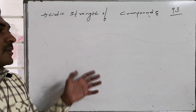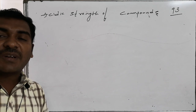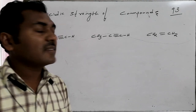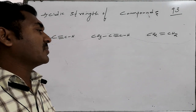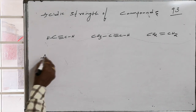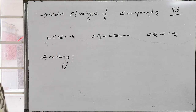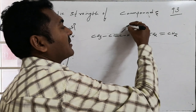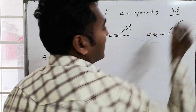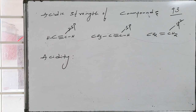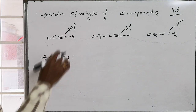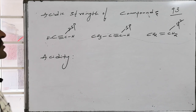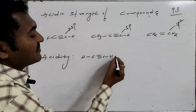A list of compounds is provided and the acidity order is to be determined. The three compounds are: (1) acetylene, (2) methyl acetylene (propyne), and (3) ethene. In acetylene, the carbon bearing the hydrogen maintains sp hybridization; in methyl acetylene the terminal carbon is also sp hybridized. sp hybridization is more electronegative, so these carbons can sustain negative charge better, making removal of H+ as an acidic proton easier with a strong base. Therefore acetylene is the most acidic.